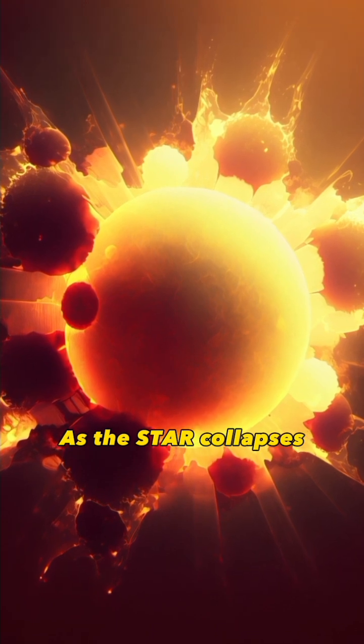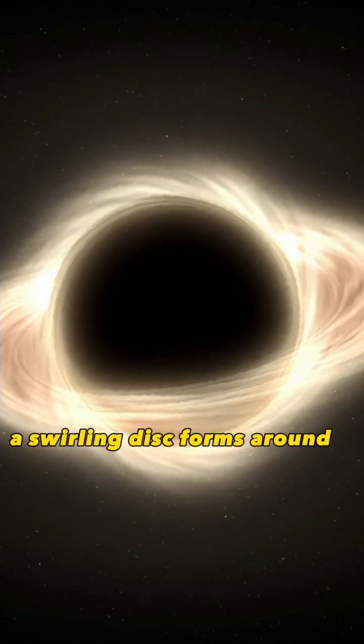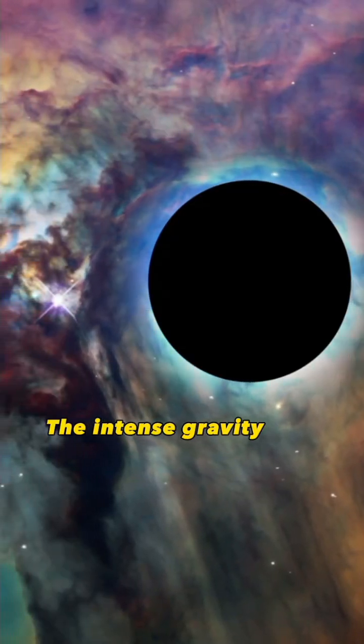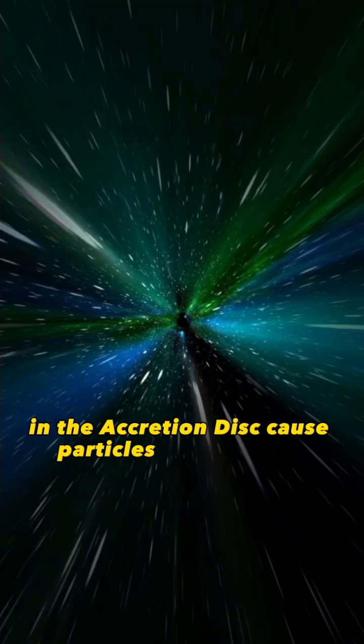As the star collapses, a swirling disk forms around it, known as the accretion disk. The intense gravity and magnetic fields in the accretion disk cause particles to accelerate to nearly the speed of light.